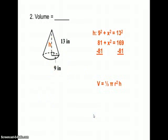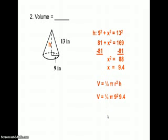81 plus x squared equals 169, so x squared equals 88. The square root of 88 is 9.4, so h equals 9.4. We plug that into our formula: one-third π times 9 squared times 9.4, and our answer is 797.3 cubic inches.